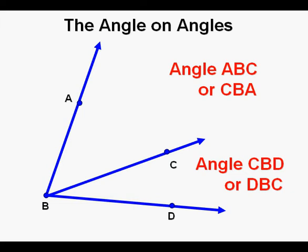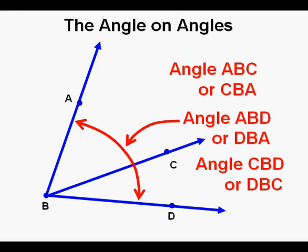The angle at the bottom can be labeled Angle CBD or Angle DBC. And, I almost forgot, there's even one more angle in this drawing. The two angles together, the top and bottom, made a third bigger composite angle as well, and that would be Angle ABD or Angle BDA.